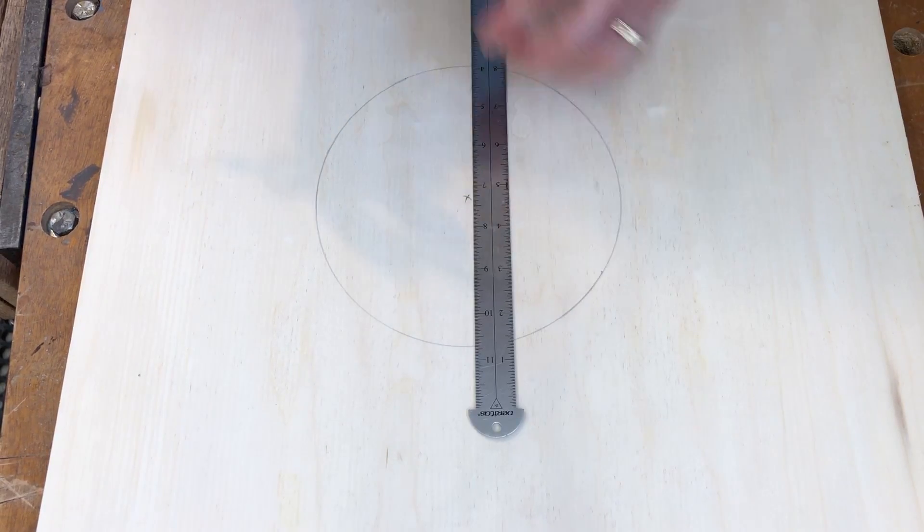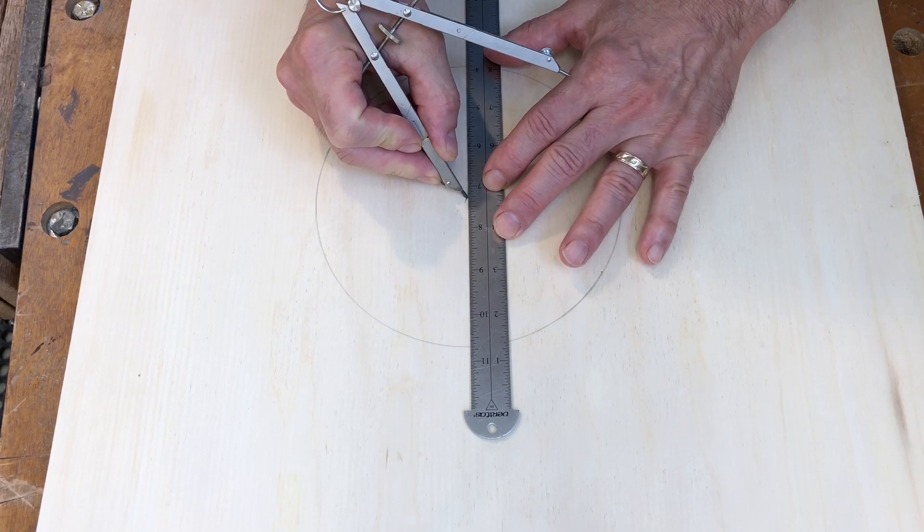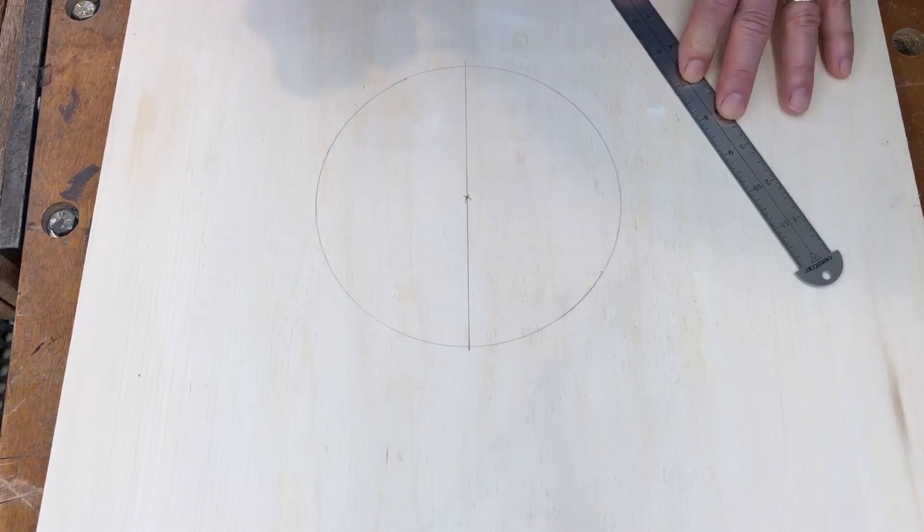First step is to simply draw a diameter across that circle. Put a ruler there, pencil in the center point, and then there's my diameter.